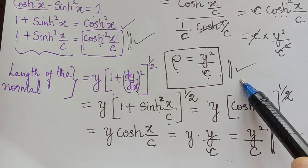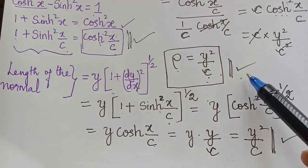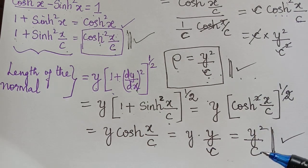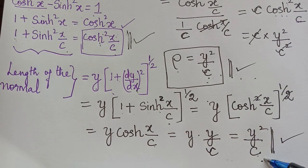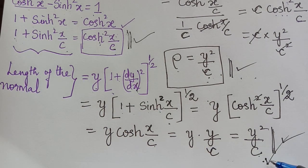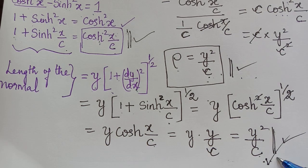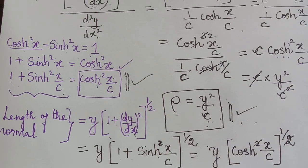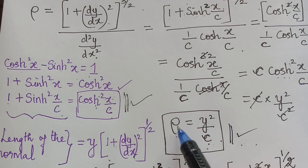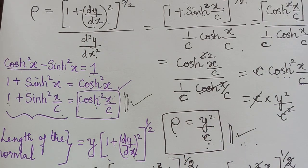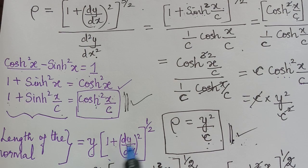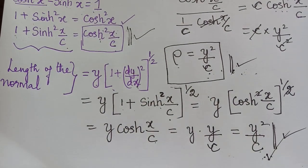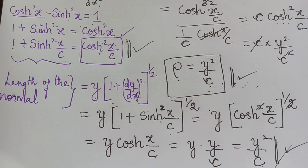Therefore, the length of the normal is y²/c and the radius of curvature is also y²/c. Hence, we have proved that the radius of curvature at any point of the given catenary equals the length of the portion of the normal intercepted between the curve and the x-axis. If asked only for the radius of curvature, you can stop at ρ = y²/c. Hope you have understood this concept. Thank you.